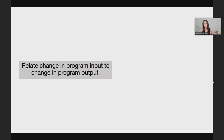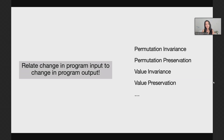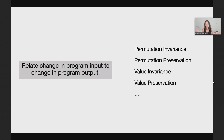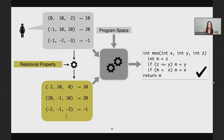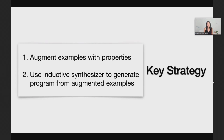I'll refer you to the paper for a fairly general formulation for all these properties, but let me just mention a few that are subsumed by this class. We've already talked about permutation invariance. There's permutation preservation, where the permutation in the output is the same as the permutation in the input. There's value invariance, where applying an affine transformation to the input leaves the output unchanged. There's value preservation, where the output has the same affine transformation as the input. For all of these relational properties, we can essentially apply the same clever strategy.